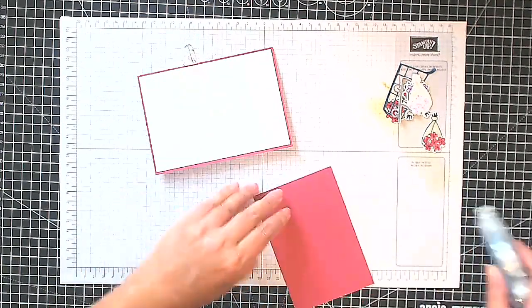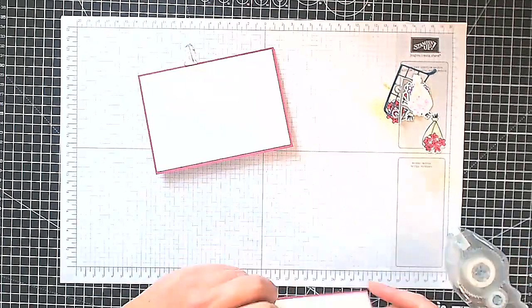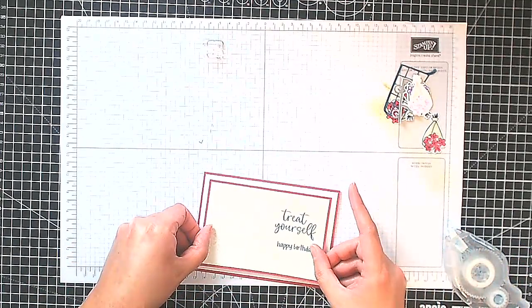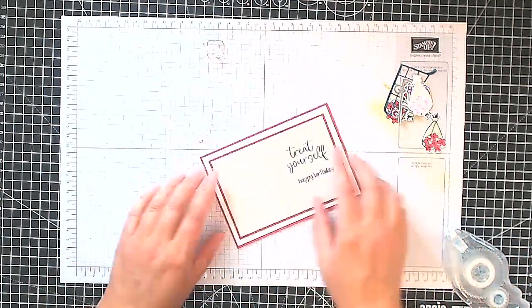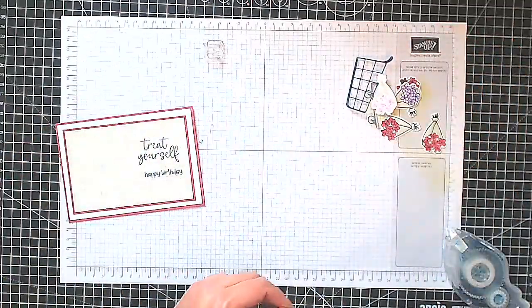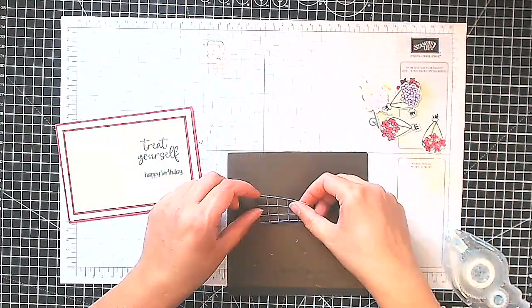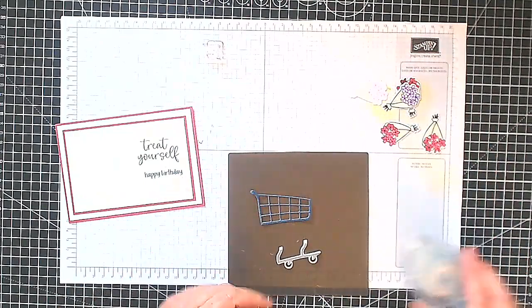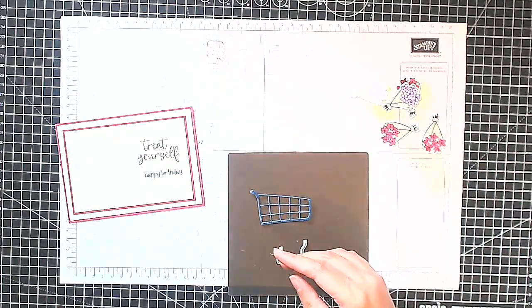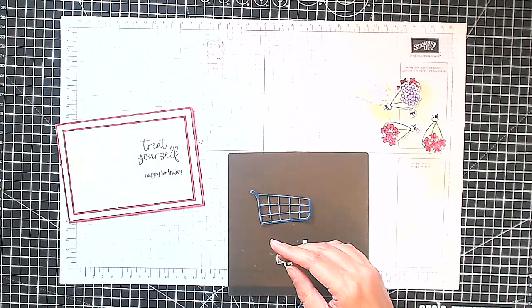I've got another piece of Basic White to go on the outside and then I've got a piece here of our designer series paper which as I said was the Country Lace. That measures 12.85 by 8.5 and the Berry Burst is 13.35 by 9, but as I said all those measurements will be on the blog post so don't rush to try and write them down now.